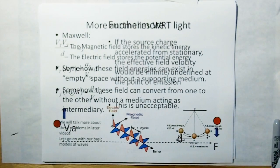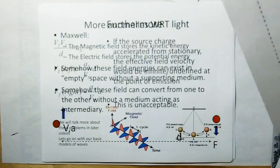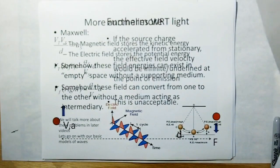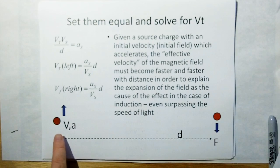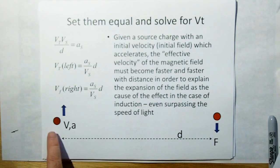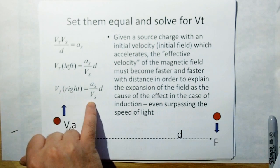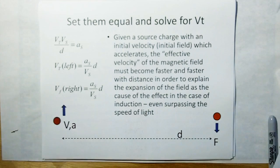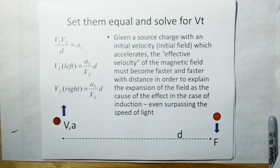The other problem with this: let's assume that the source charge was starting from zero velocity before it began to accelerate. Well, at a velocity of zero, you have division by zero here. So that means the field velocity is virtually infinite at the point of origin. That's ridiculous — it doesn't make sense no matter how you try to cut it or justify it.